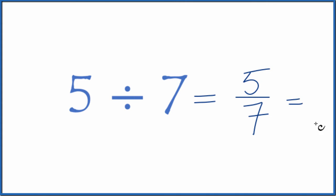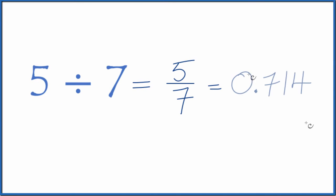We could also do this on our calculator. And when you divide 5 by 7 on your calculator, you get 0.714, and this number keeps going. So I've rounded this number here to 3 places after the decimal point.